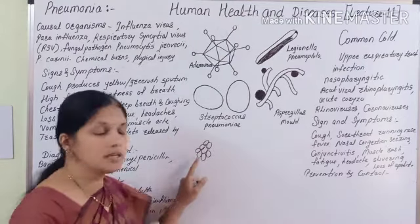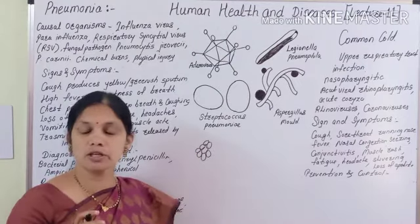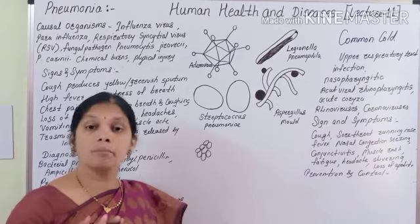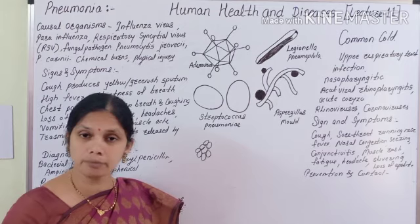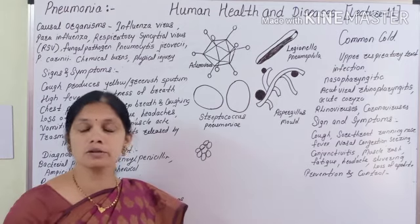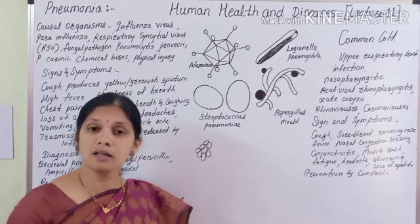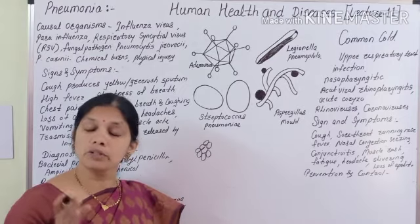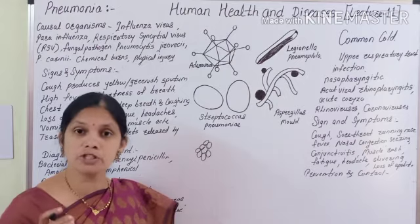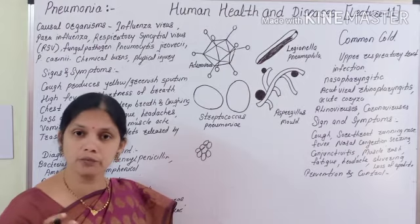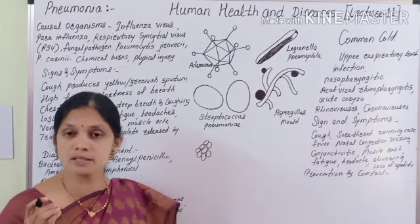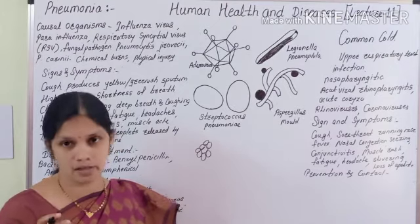This inflammation is mostly due to infection — viral infection, bacterial infection, and fungal infection, as well as some other infections that lead to pneumonia. In pneumonia, the air sacs are filled with a yellowish-greenish sputum.